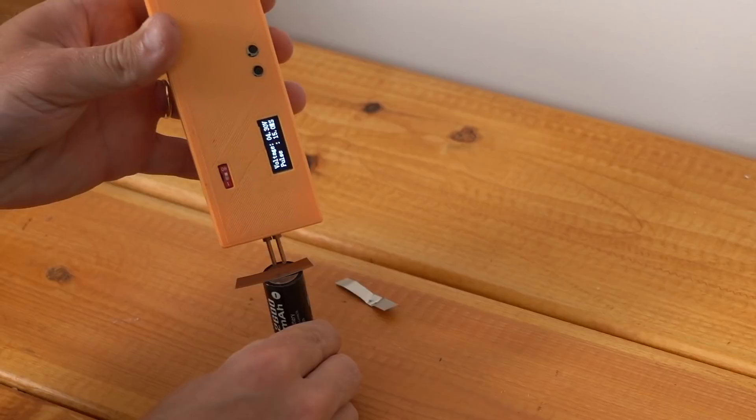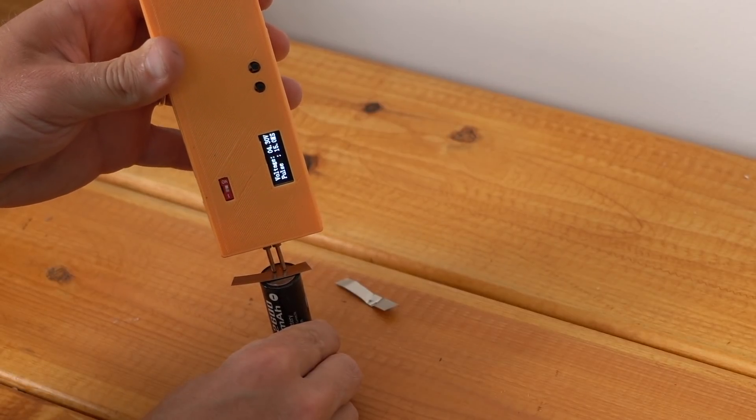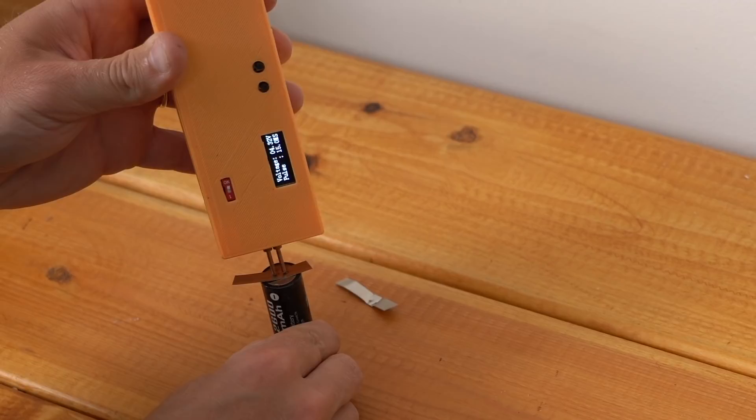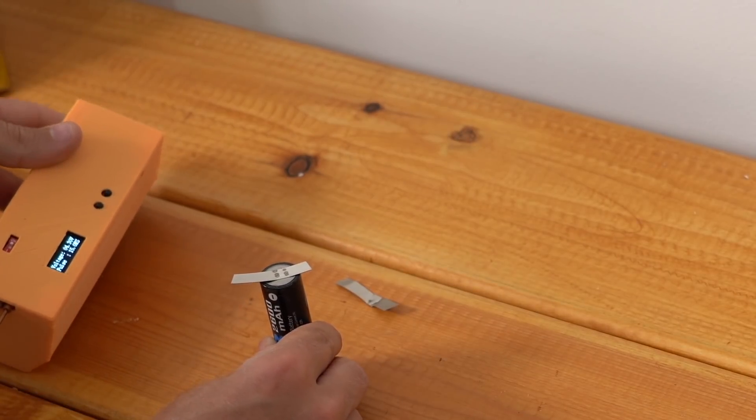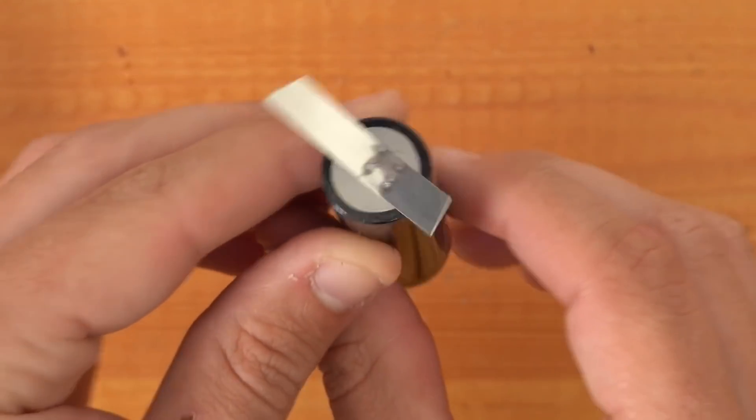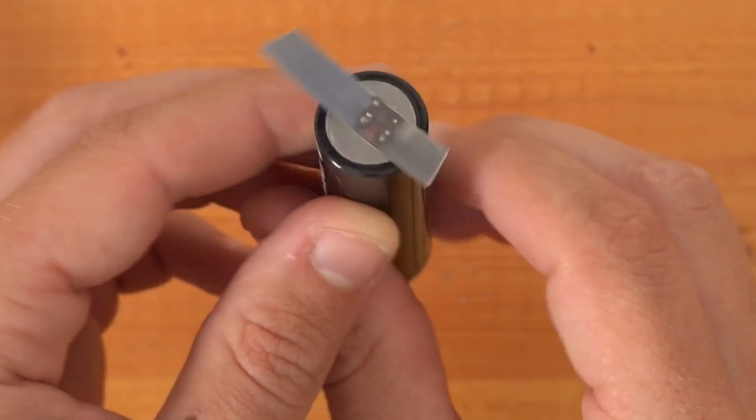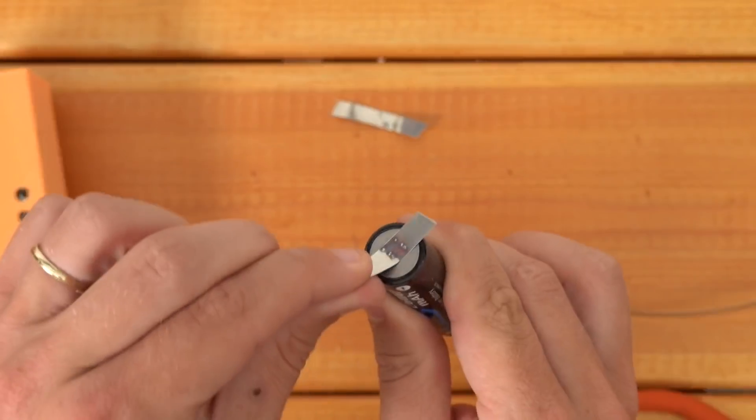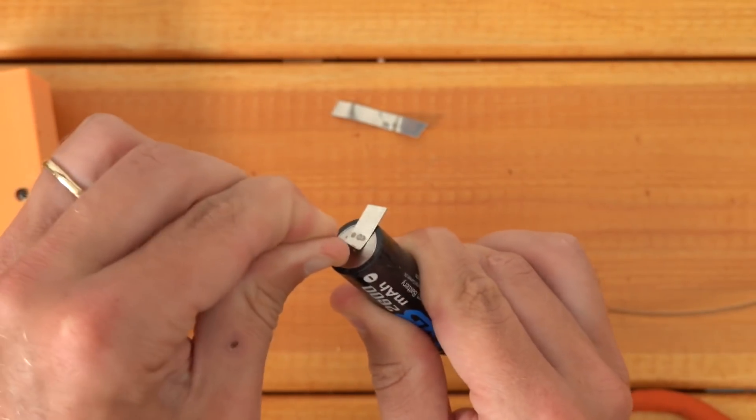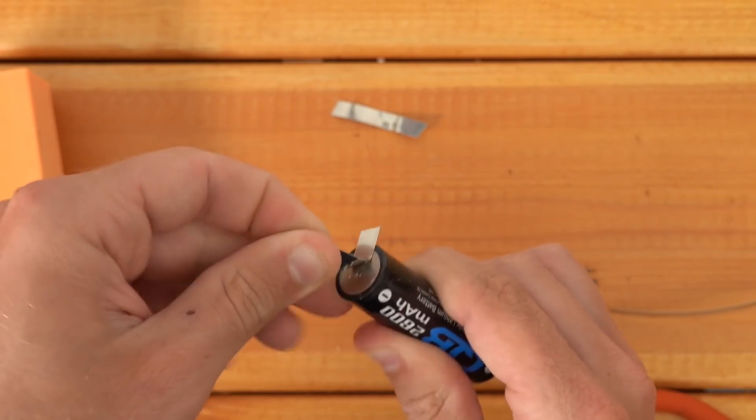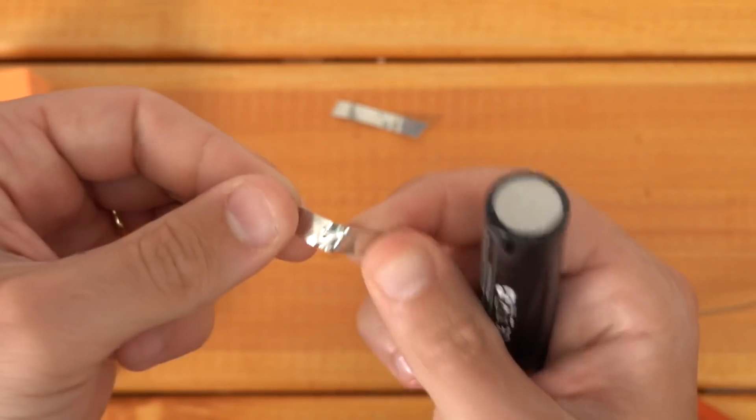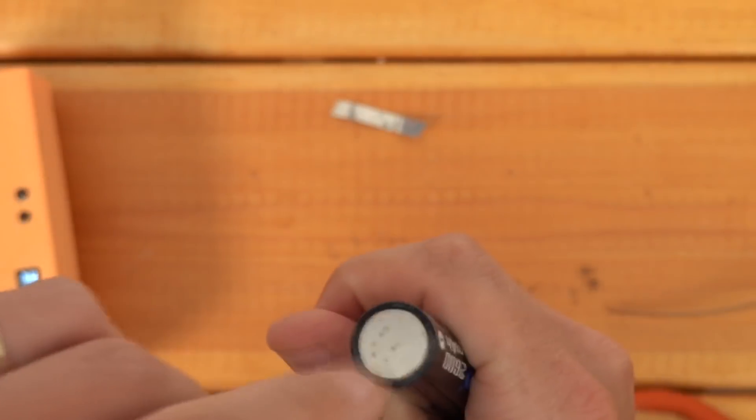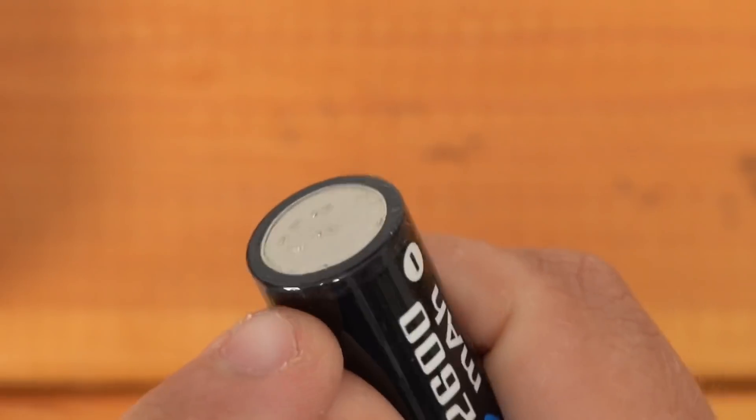All right so here are three spot welds, six points. This is how I would typically weld a cell if I was building a battery. All right so I'm able to slowly work it off with my hand though. This weld is a bit stronger.